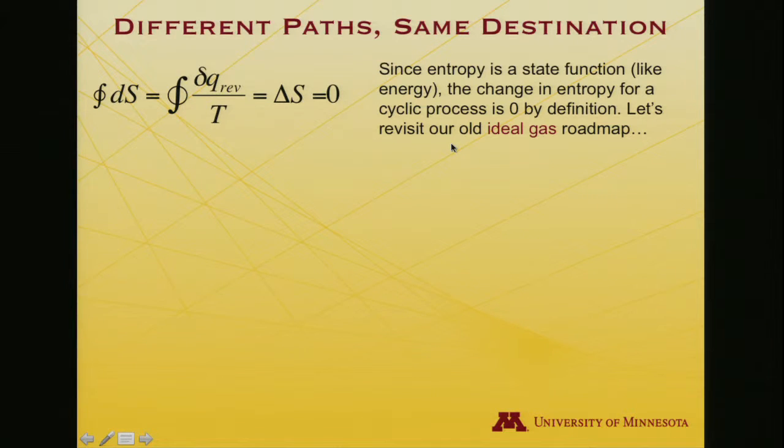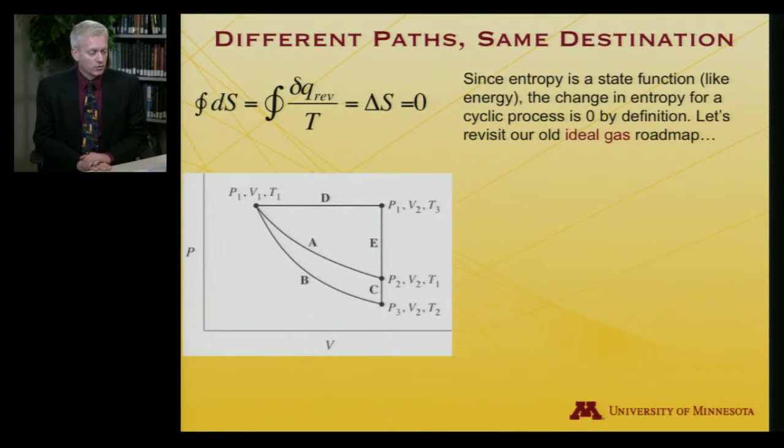But what I'd like to do then is go back to our ideal gas roadmap that we used to look at changes in internal energy and observed that U was a state function. So here's our old friend where we considered different ways to go from original pressure, volume, and temperature to a second pressure and volume, but still the same temperature. There's the isothermal expansion, the adiabatic expansion followed by constant volume warming, and the constant pressure expansion followed by constant volume cooling.